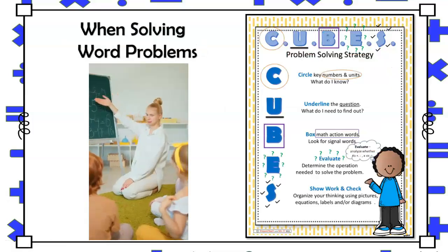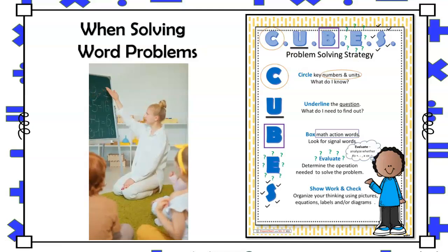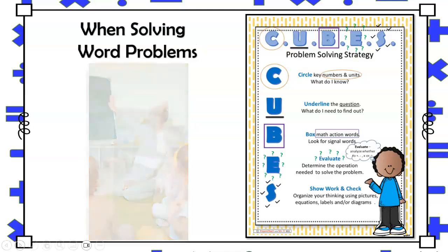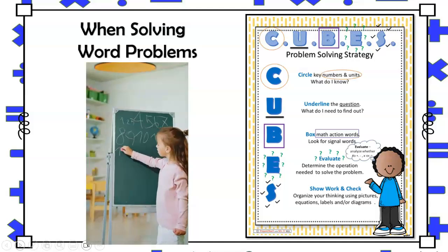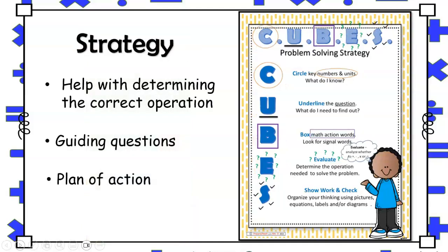It is important to first model several examples with your little ones using the gradual release method until they are able to work through problems independently. Let's see how this can be done using the cube strategy to solve a few problems and see how we can help develop students to become confident and better math problem solvers.